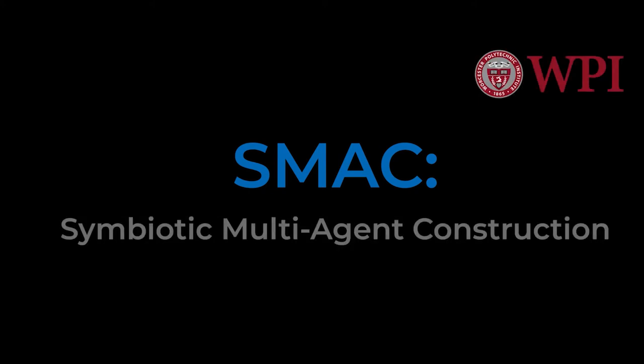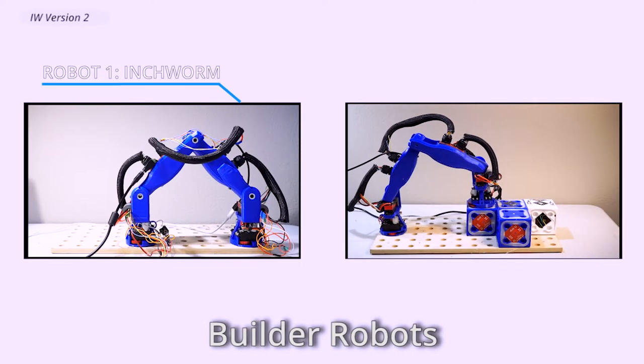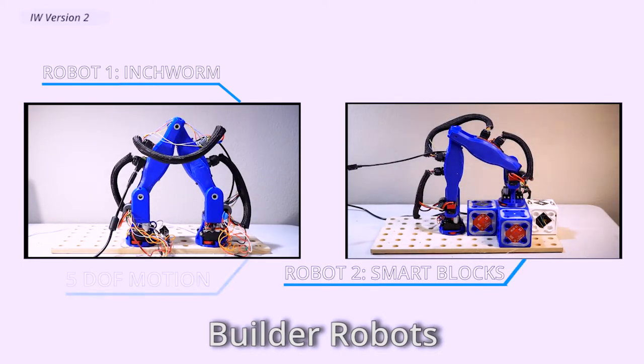We present to you SMAC, Symbiotic Multi-Agent Construction. The swarm construction system uses two types of robots that work collaboratively to build structures.